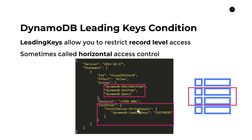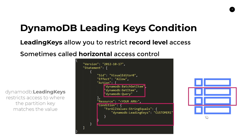In the condition section, we're taking advantage of the three concepts we discussed. The condition operator is ForAllValues:StringEquals. The condition key is DynamoDB:LeadingKeys — specific to DynamoDB — and the value is customer one. Effectively, this policy restricts access to items in the table where the partition key is customer one. It's important to understand: leading keys applies to the partition key only, not any other attribute or column.